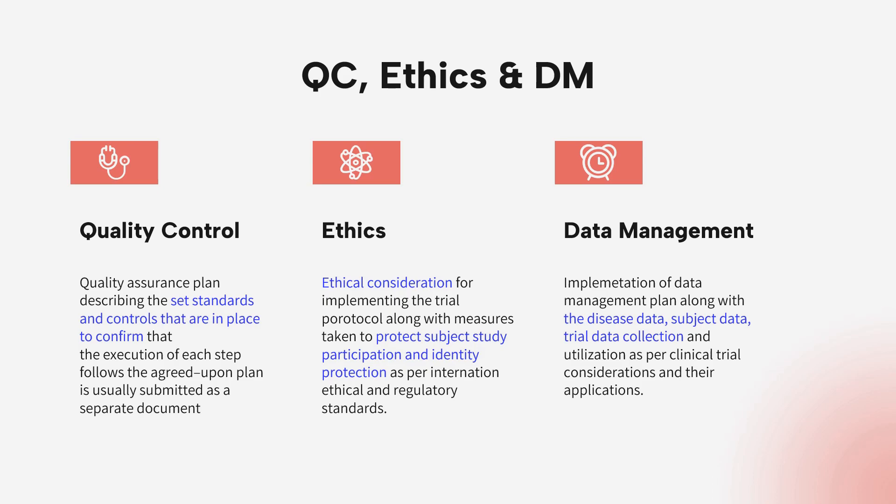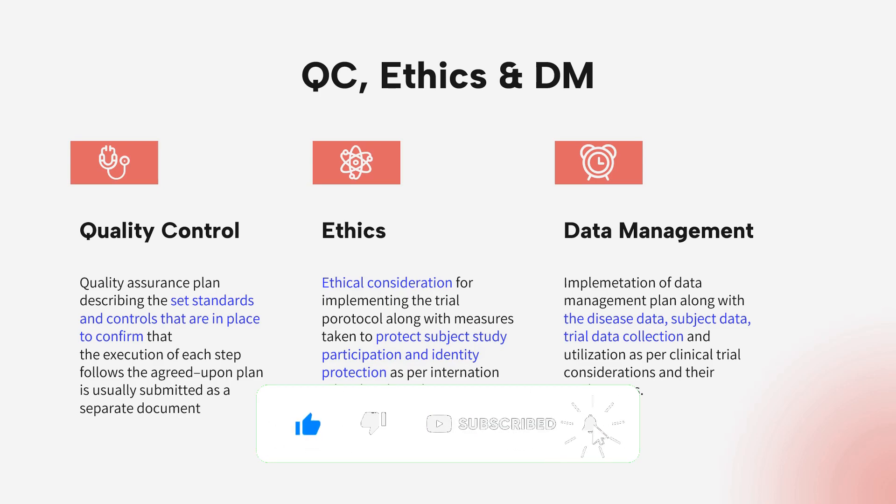In terms of regulatory and ethics, three important parameters are covered: data management, quality control, and ethics. The Quality Assurance plan describes the standards and controls used to execute each step of the clinical trial and what documents will be generated. The ethics section describes which disease or condition is being studied, the genetics or lifestyle factors being considered, the ethical parameters included in the trial, the adjustments made to maintain ethics, how disease data will be collected over the short or long term, and how that data will be stored and used to support the clinical trial.